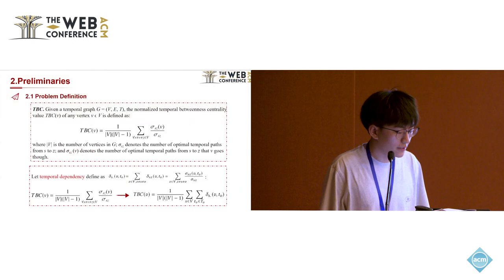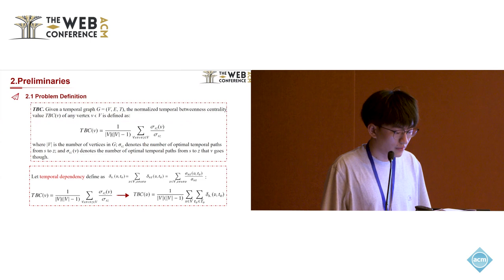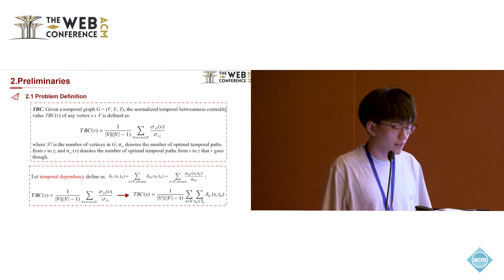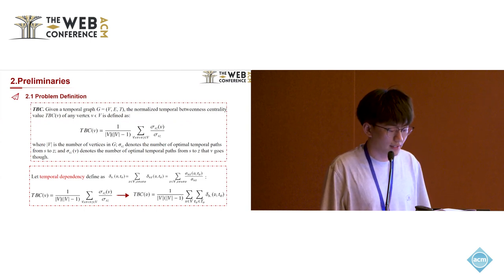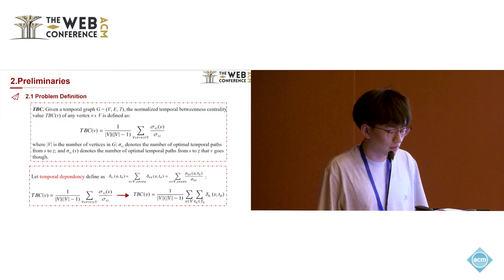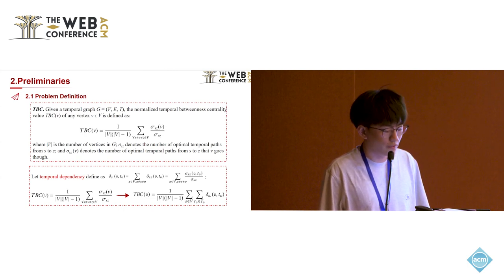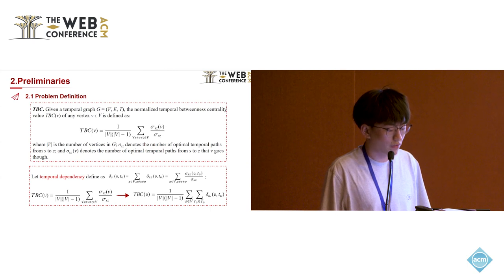Part 2. This page shows the definition of temporal betweenness centrality, where V is the number of vertices in the temporal graph. Sigma(s,z) denotes the number of optimal temporal paths from S to Z, and Sigma(s,z,v) denotes the number of those paths that go through vertex V. In order to calculate the temporal betweenness of each vertex, we devised a temporal dependency, which turns the computation into a cumulative calculation of importance of each vertex instance based on different timestamps.